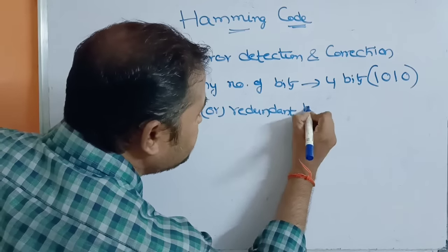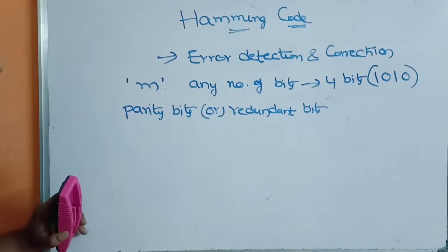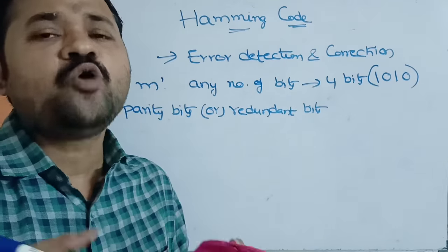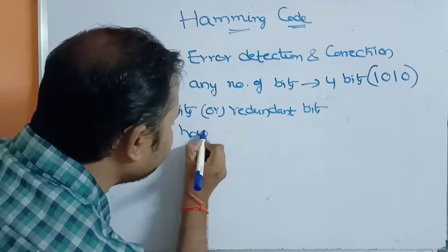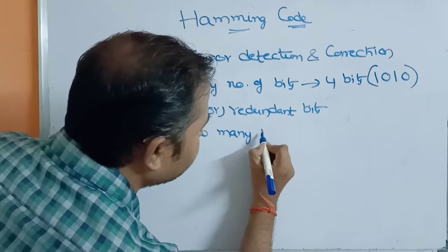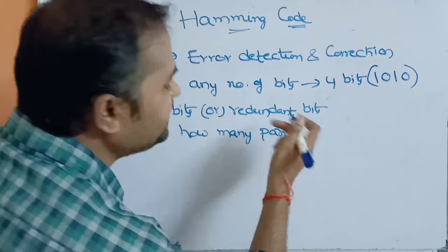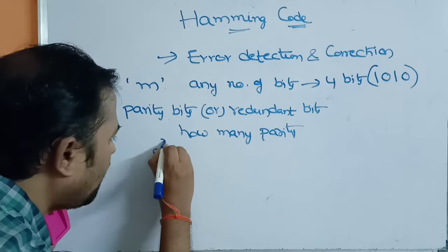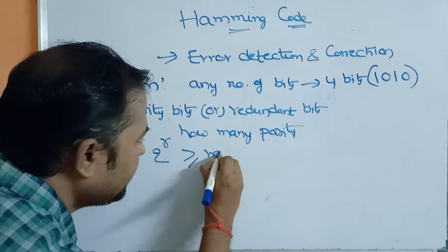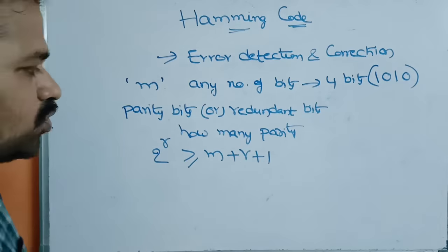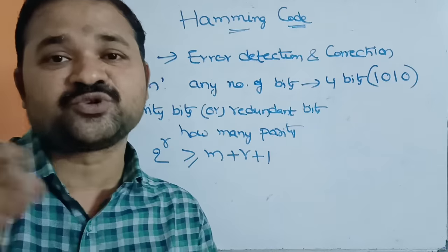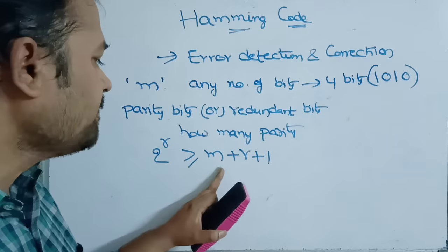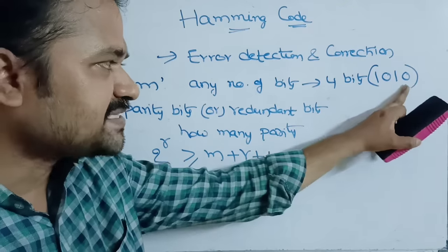How many parity bits will be sent depends upon the message. To determine how many redundant bits are needed, we use the formula: 2^r ≥ m + r + 1, where r is the number of redundant or parity bits and m is the size of the message. In this example, the size of the message is 4 bits.